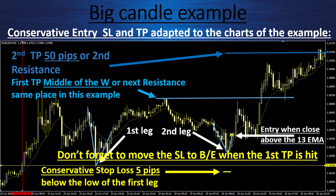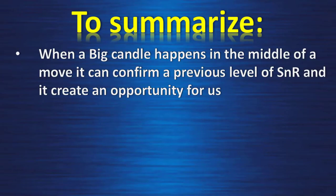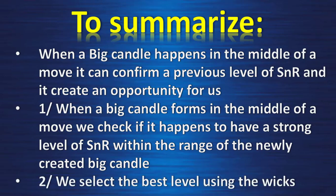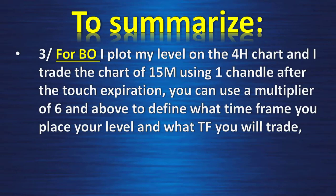To summarize: when a big candle happens in the middle of a move, it can confirm a previous level of support and resistance and creates an opportunity at the next touch of this level within the range of the big candle. When a big candle forms in the middle of a move, we check if there is a strong level of support and resistance within its range. We select the best level using the wicks. For binary option, I plot my level on the four-hour chart and trade the 15-minute chart using one candle expiry after the touch, entering exactly at the level. You can use a multiplier of six and above to define what timeframe to place your level and what timeframe to trade.